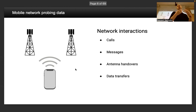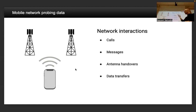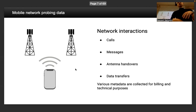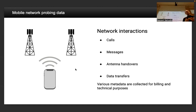There are a number of different interactions that can happen: calls, messages, antenna handovers when roaming and switching between networks, and regular data uploads and downloads. All of this is collected by mobile operators as fields of metadata, used primarily for billing and technical purposes.